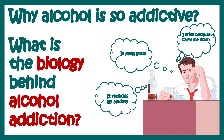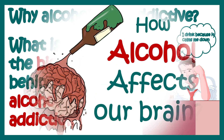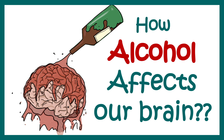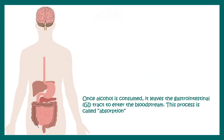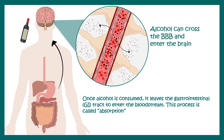Let's learn what is the biology behind alcohol addiction. In order to understand that, we have to understand how alcohol affects our brain. Once alcohol is consumed, it leaves our gastrointestinal system and enters the bloodstream. While in the bloodstream it can circulate throughout the body and eventually reach our brain. Our brain is protected by the blood-brain barrier, which doesn't allow just anything to get inside — but alcohol can easily make its way through.